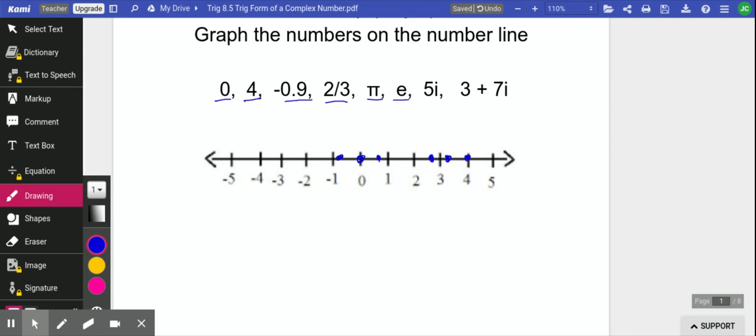But then we get to 5i, and this is an imaginary number. We don't really have a place to put that because we call this a real number line. There's not a place for imaginary numbers, and certainly not for complex numbers like 3 plus 7i.